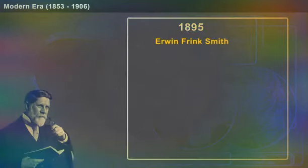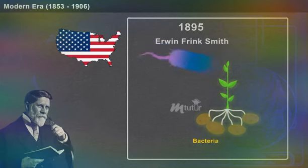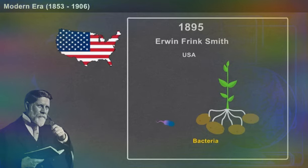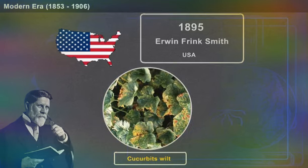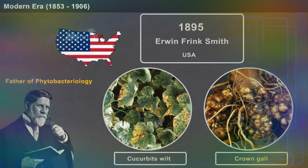In 1895, Erwin Frank Smith of the USA gave the final proof that bacteria could be incitants of plant diseases. He also worked on the bacterial wilt of cucurbits and crown gall disease. Smith was regarded as the father of phytobacteriology for his discoveries and methodologies.